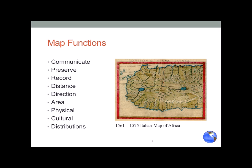Maps function in several ways. They communicate information, preserve information that could be changing — like coastlines — and record whatever you need about a particular location. They can be used to calculate distance based on their scale, direction, or azimuth, and also to calculate area. They record physical and cultural features and distributions. Here's a 1561 to 1575 Italian map of Africa — it has rivers, cities, lakes, coastlines, and islands, all of which maps can preserve. Thankfully we have these historical maps, because many of these features are gone.